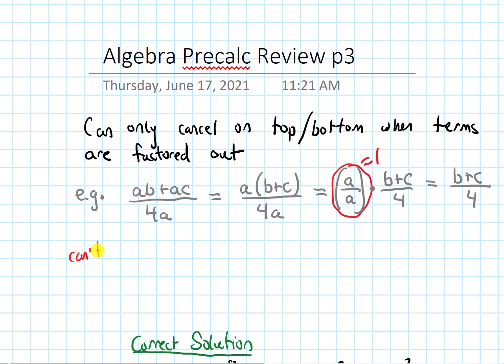So let me also give a scenario where we cannot cancel. Where I wouldn't be able to cancel is if I had something like ab+c on the top and then just 4a on the bottom. I cannot cancel the a's because the a on the top has not been factored out. But a on the bottom has.